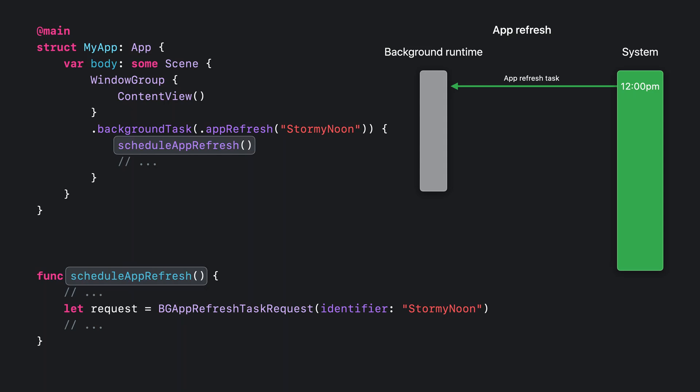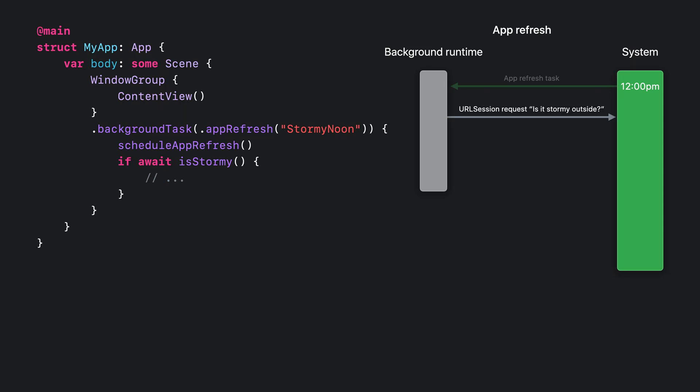In order for us to be sure that we are scheduled again for tomorrow, we'll start our background task by calling the scheduleAppRefresh function to schedule background runtime again for tomorrow at noon. Now that our background runtime at noon is recurring, we make our network request to check whether it's stormy outside, and wait for the result using the await Swift keyword. Then, if our network request has returned and it is indeed stormy outside, we await sending the notification to the user, prompting them to upload a photo of the sky. When the body of our closure returns, the underlying background task assigned to our application by the system is implicitly marked as complete, and the system can suspend our application again.